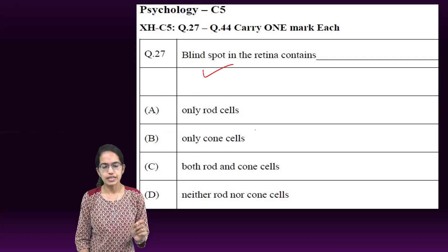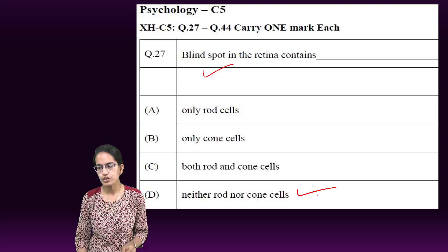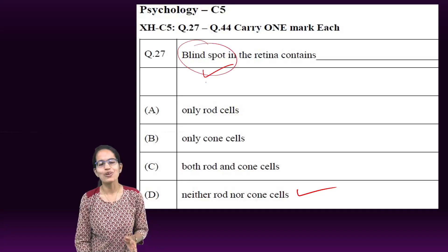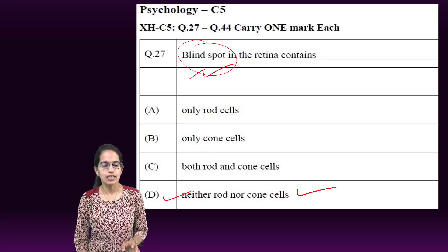The first was: blind spot in the retina is a place where there is neither rod nor cone cells, and there is no light detecting nerve cells, and therefore the name blind spot. From the name itself we can get the answer, so D becomes the right answer.